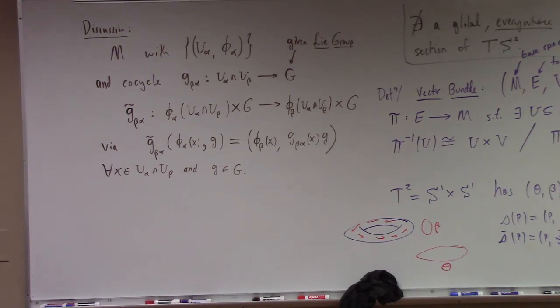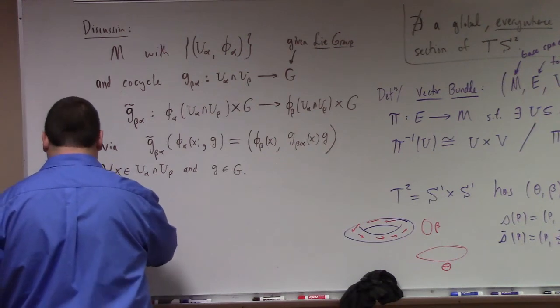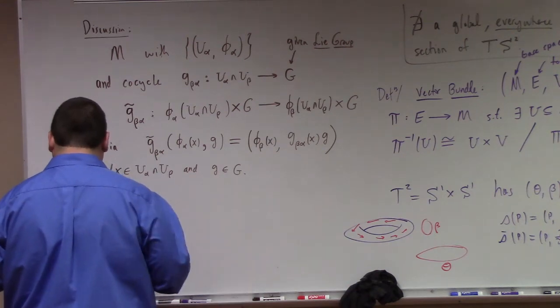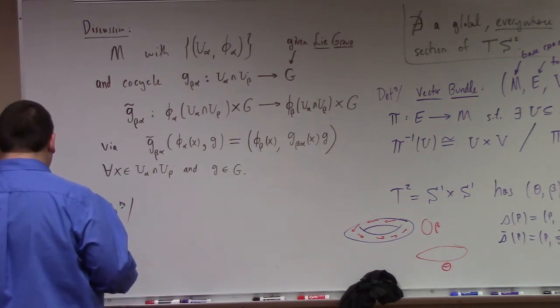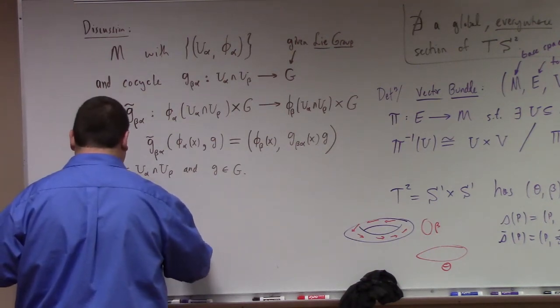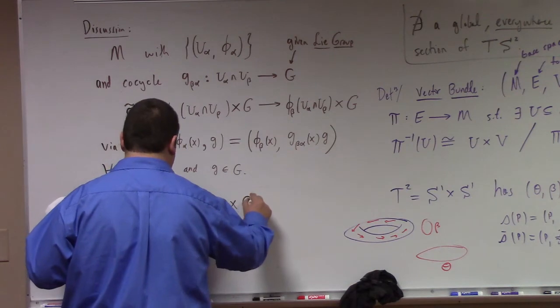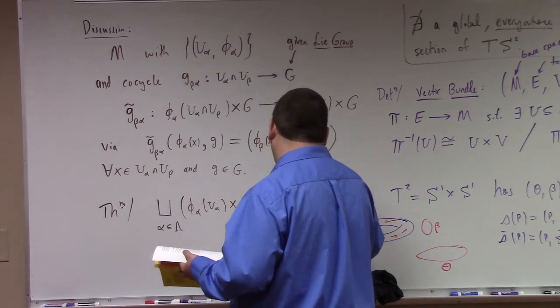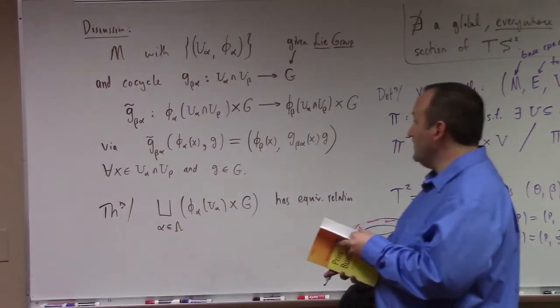Anyway, so if you have M in the atlas above and the co-cycle is just given above, then these functions just defined that I've just written here define an equivalence relation on the disjoint union alpha in alpha of phi alpha of u alpha Cartesian product with G, has equivalence relation given by these g tildes.